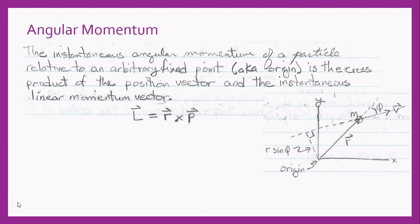Angular momentum is calculated relative to an arbitrary fixed point, which we call the origin, and it's the cross product of the position vector and the instantaneous linear momentum. We have our particle and its position relative to our origin, and the particle is moving along this line of motion with a mass m and the velocity vector. So our angular momentum is the cross product of the position vector and the momentum vector.